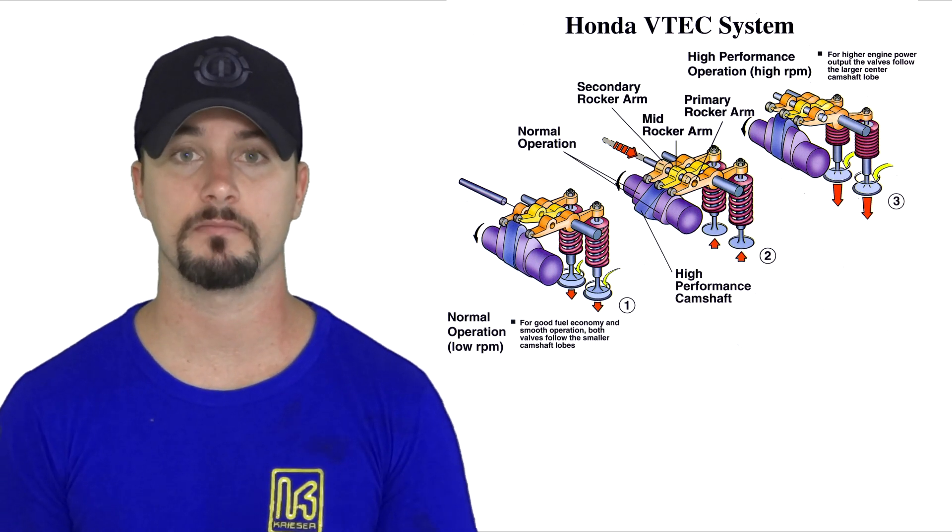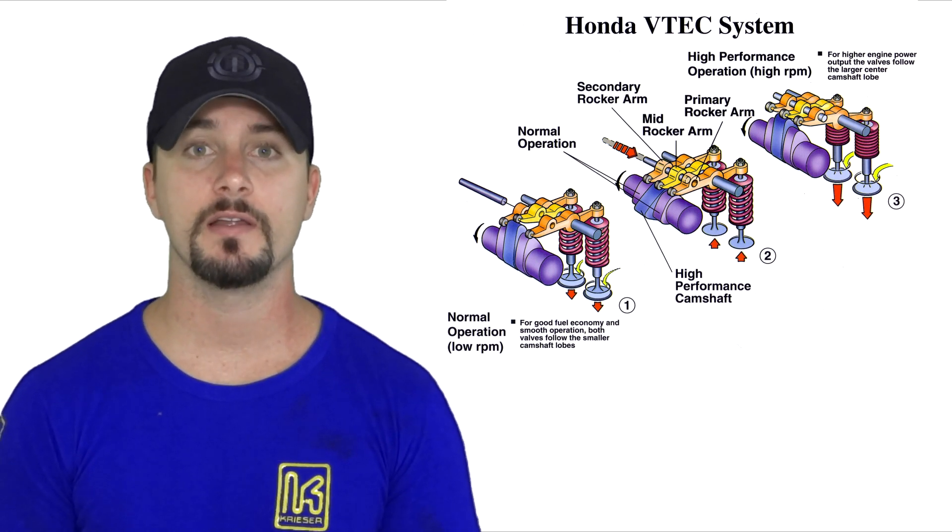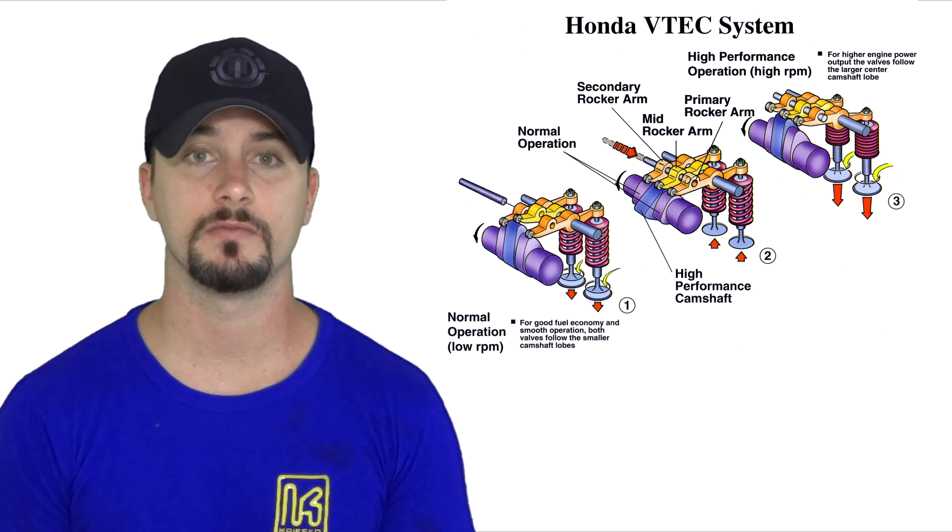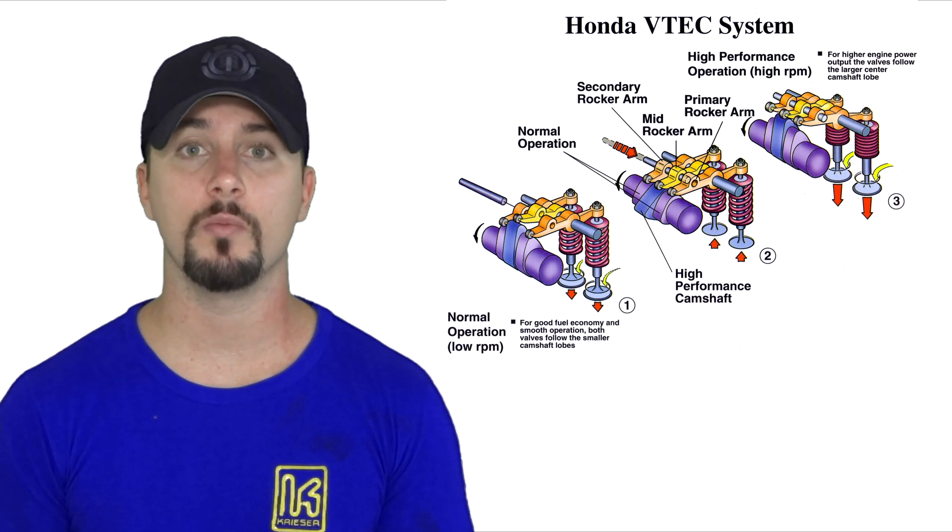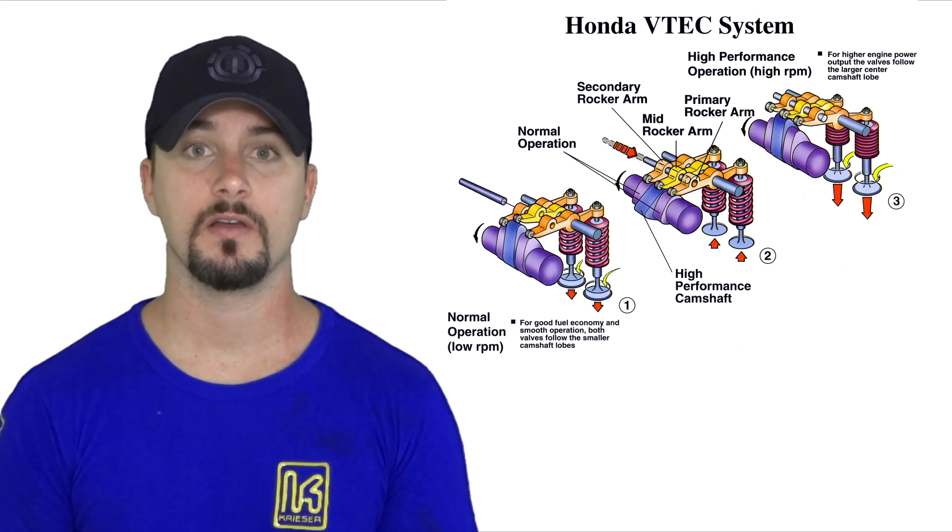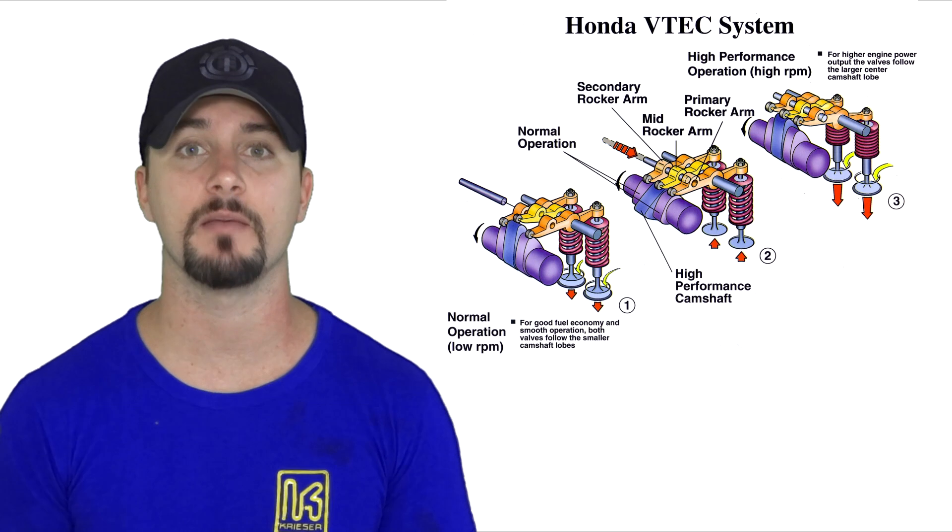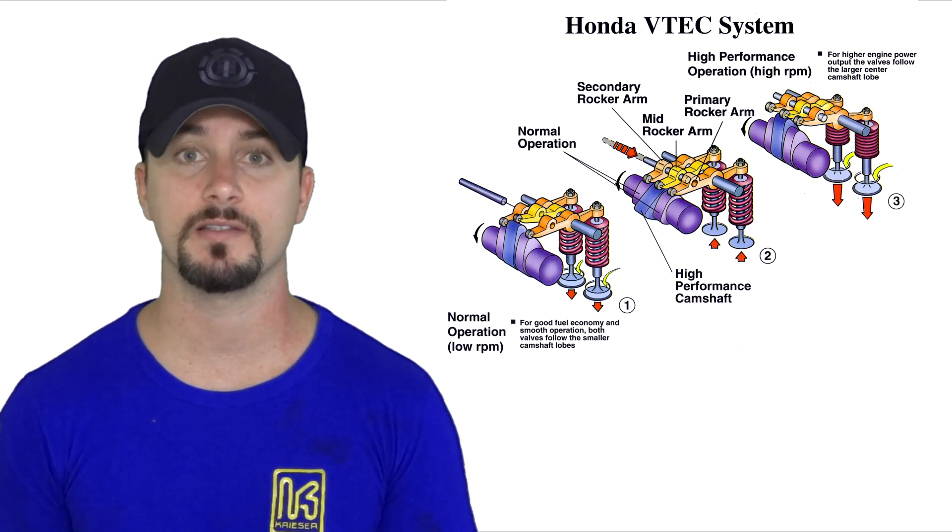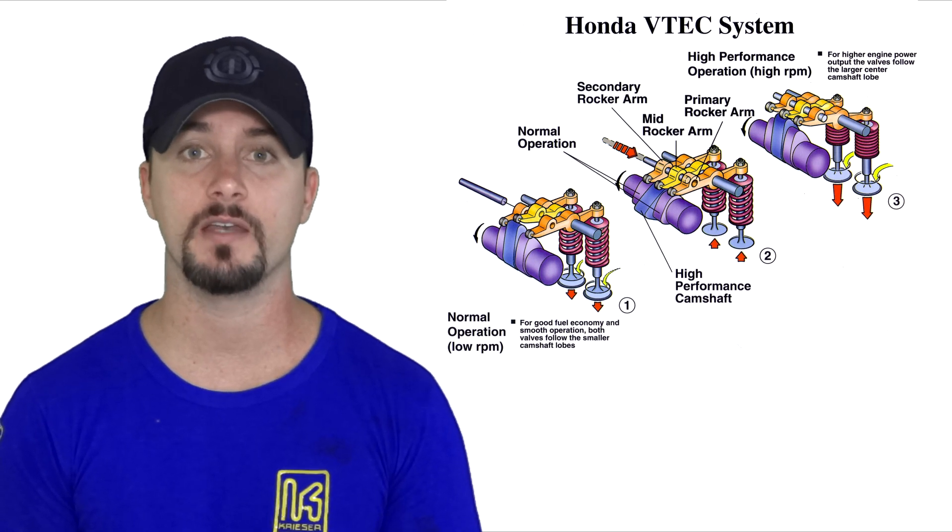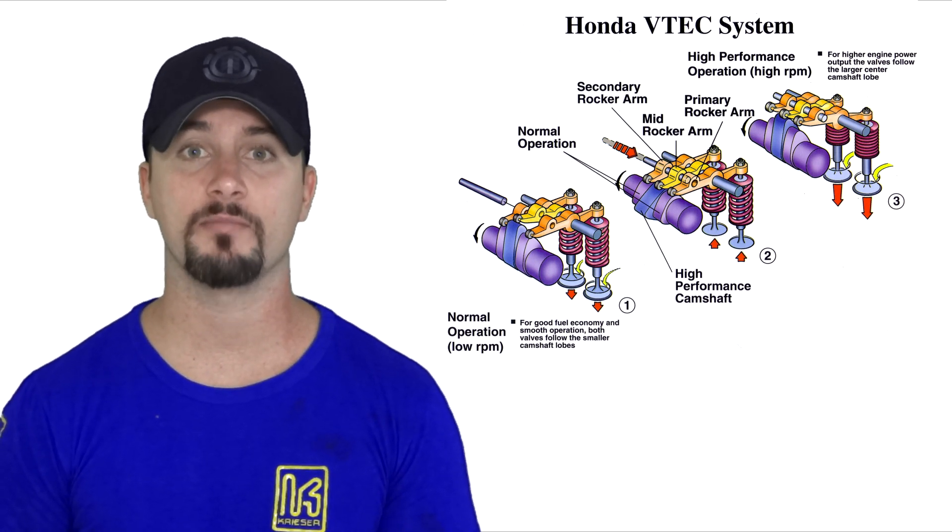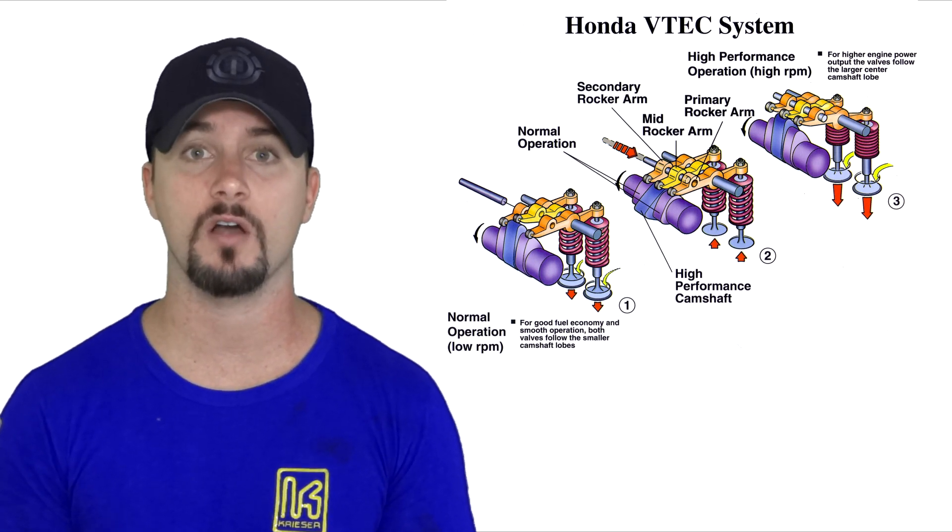The mid rocker arm is what rides on the high lobe of the camshaft. At low RPMs, that rocker arm is not enabled until the synchronizing piston goes through all three of the rocker arms, locking them in, allowing the camshaft profile to lift the rocker arms higher, therefore pushing the valve down further, creating more horsepower at higher RPMs.